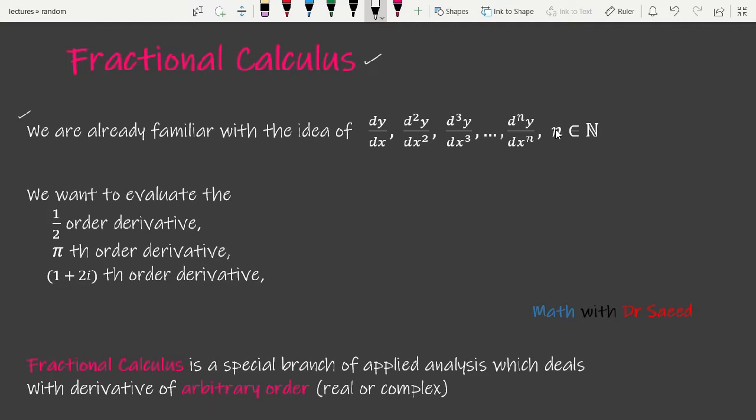We already know that we can differentiate a function one time, two times, three times, four times and so on. But we cannot differentiate a function between these positive integers — like one-half time or one-point-one time — we are only able to differentiate a function an integer number of times. But in fractional calculus, we want to extend this idea from positive integers to any arbitrary real number. This means we want to evaluate the half-derivative of some function, even the π-th derivative, or even complex-order derivatives like the (1 + 2i)-th derivative of some function.